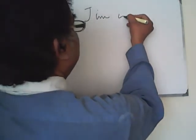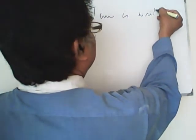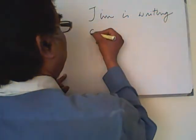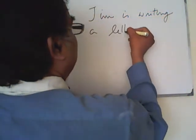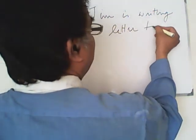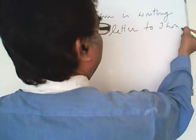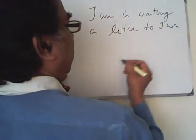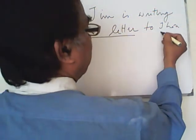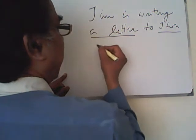He is writing a letter to John. Now you are watching — there are two objects. What is the letter? And John. But if I write this way...